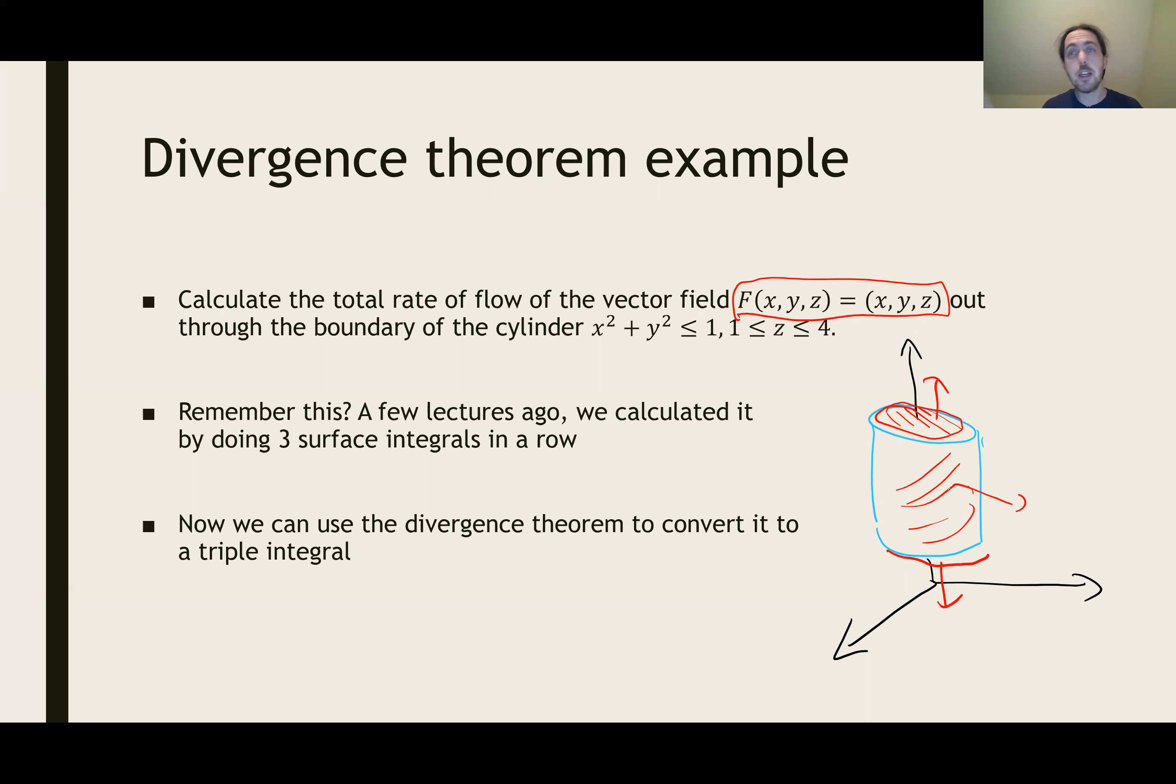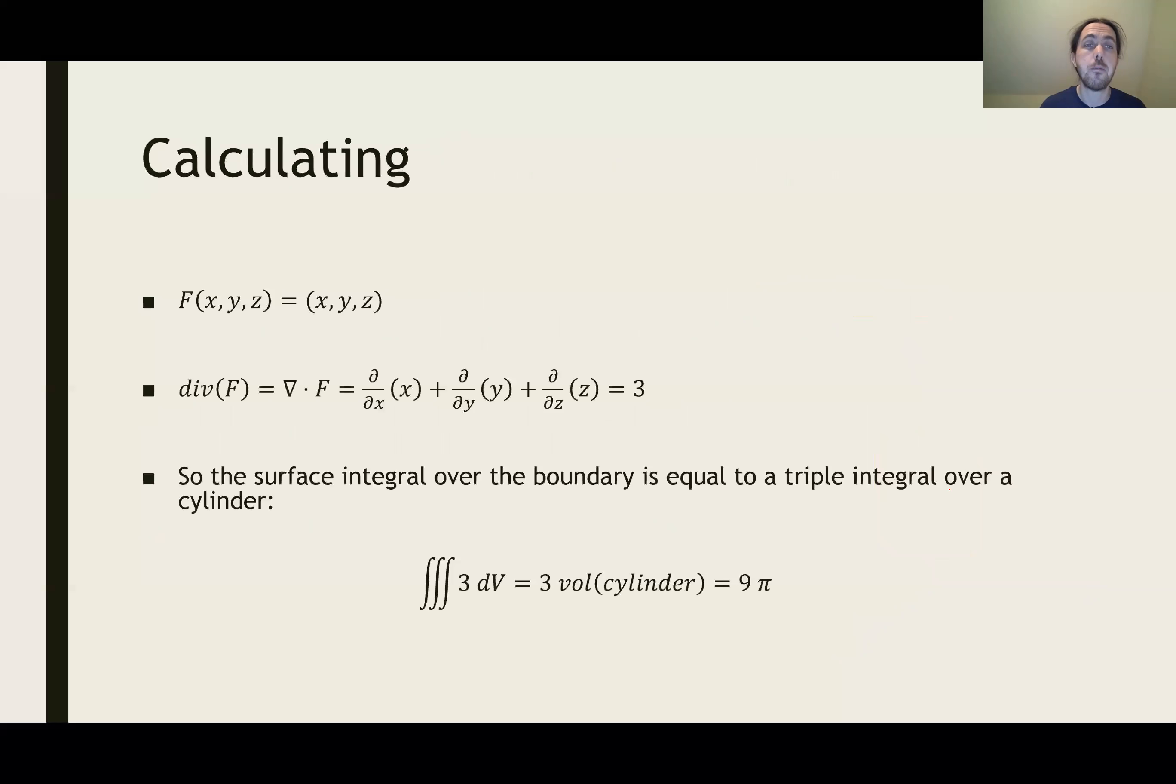But now we can do it with a triple integral by applying the divergence theorem. We have the vector field F(x, y, z) = (x, y, z). We calculate its divergence by taking the x derivative of the first part, the y derivative of the second, and the z derivative of the third, and adding them up. The divergence of this vector field is 3,